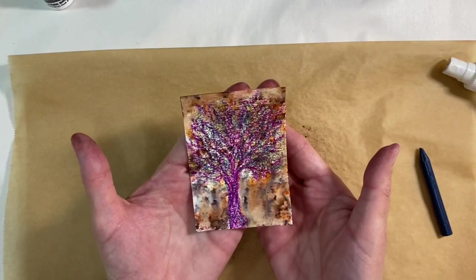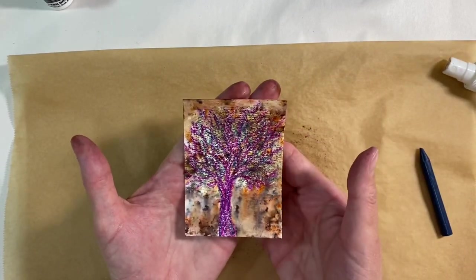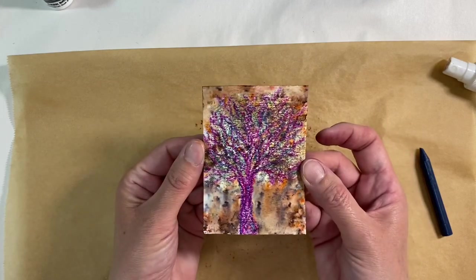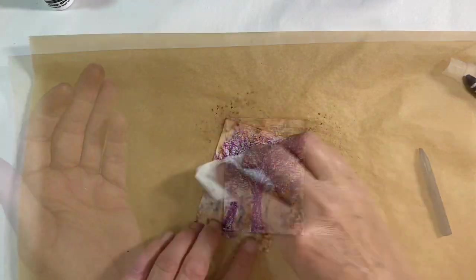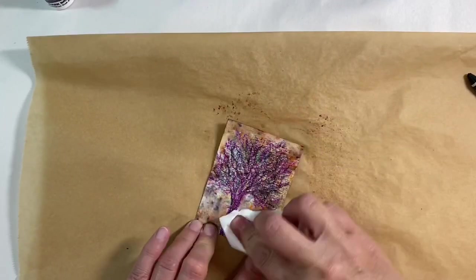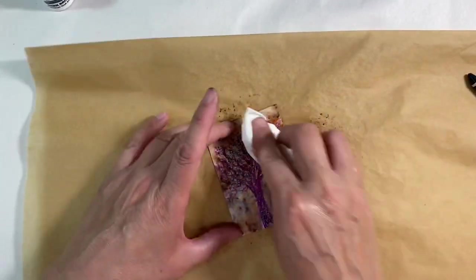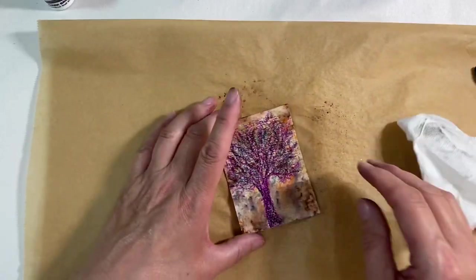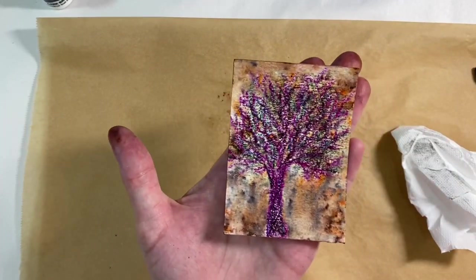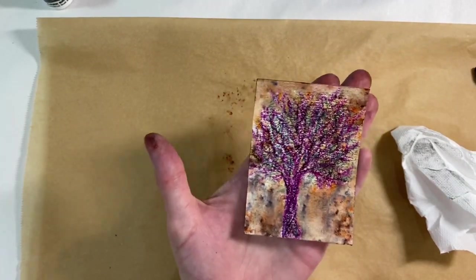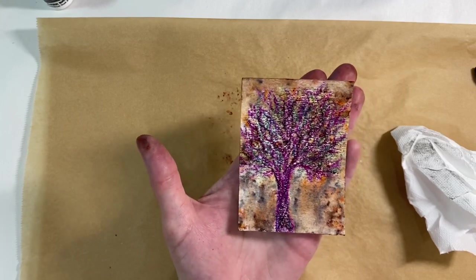And I do want to ink around the background as well, just to add some kind of a border. Finally, I'm just going to rub over this with a tissue as well, just to wipe any of the excess ink away that's covering the wax. I think that's beautiful. I love that. Very abstract, very autumnal.